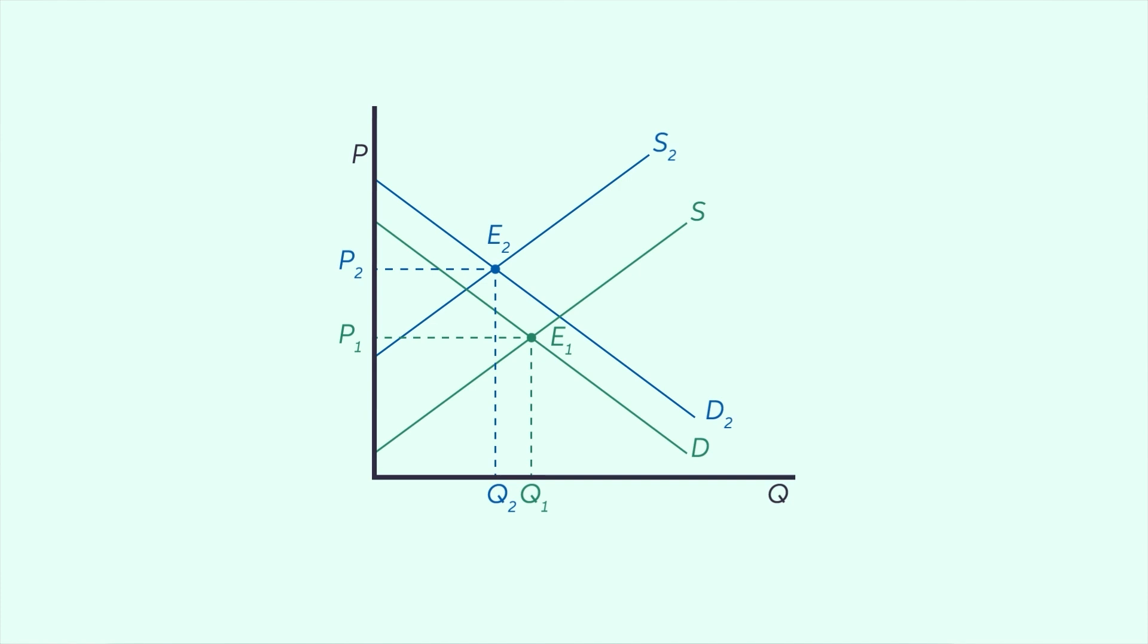In this case, the shift in demand is less than the shift in supply, which results in a decrease in the equilibrium quantity.